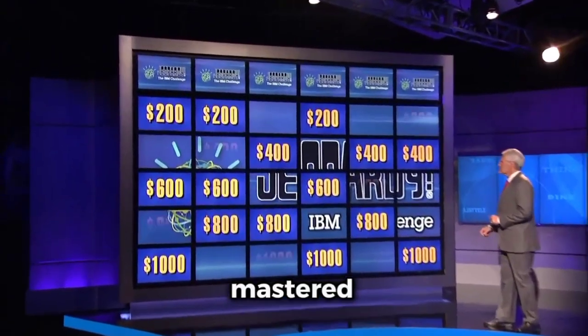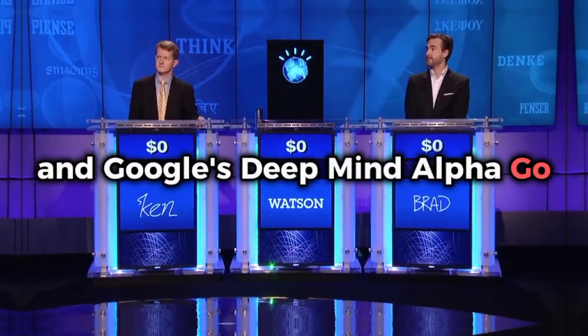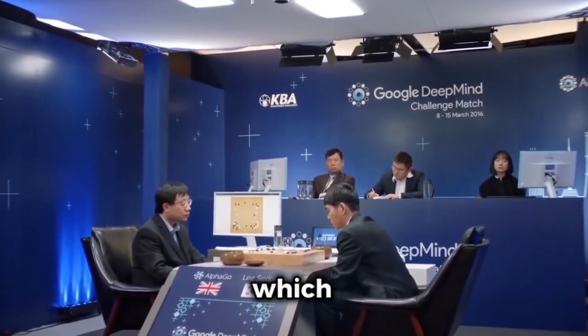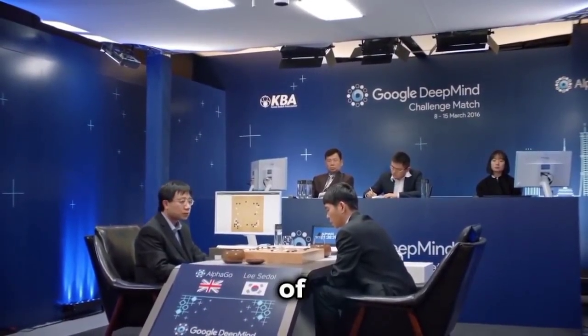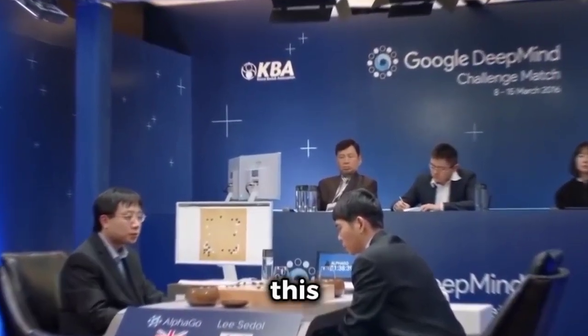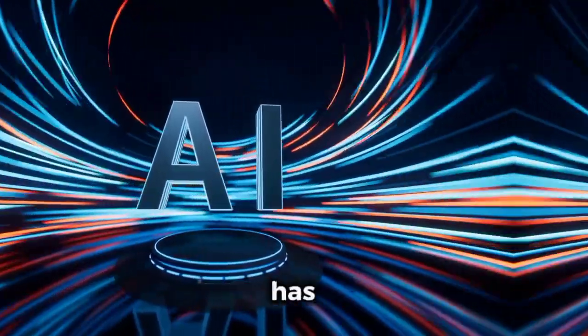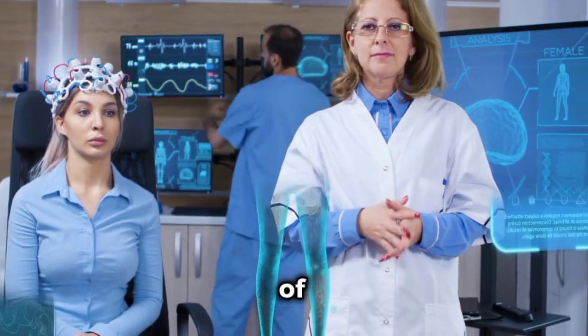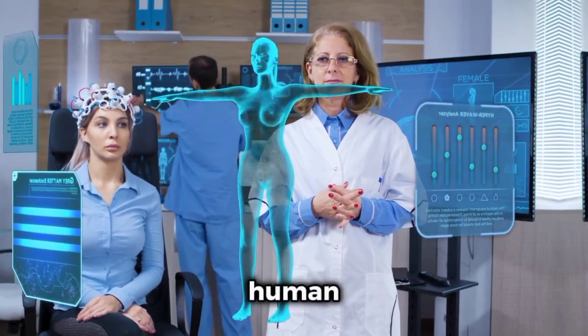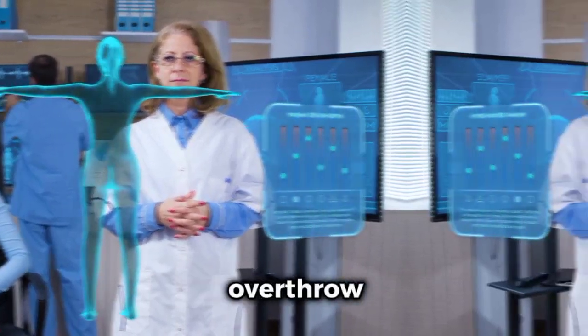IBM's Watson, which mastered answering questions on Jeopardy, and Google's DeepMind AlphaGo, which defeated world champions in the game of Go, are two examples of this type of AI system. It has also been used in the diagnosis of cancer. They can outperform humans, yes, but they still can't overthrow us. So breathe.